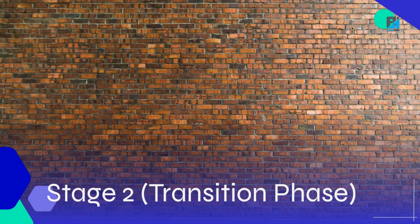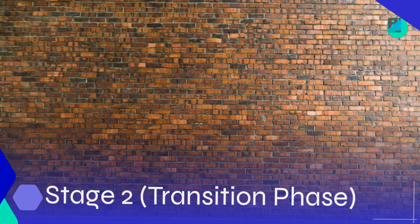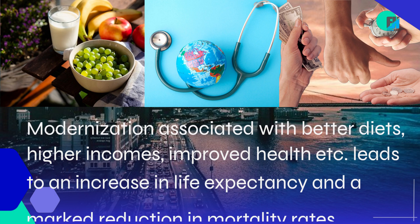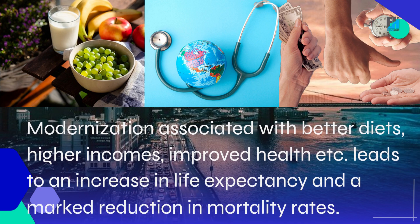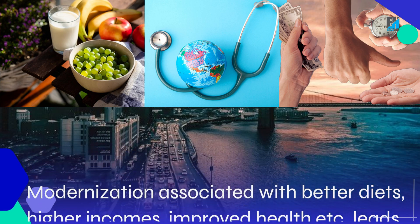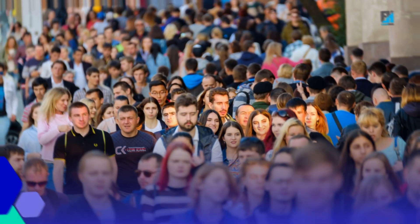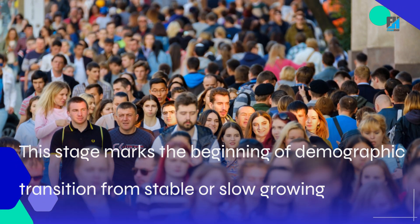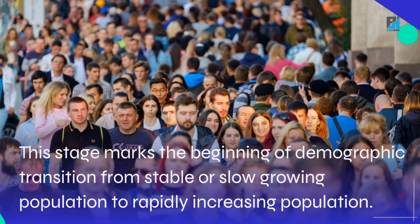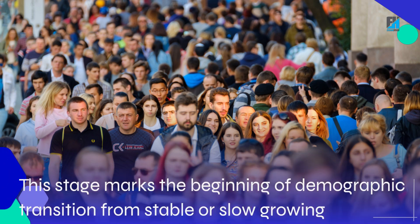Stage 2: Transition Phase. Modernization associated with better diets, higher incomes, improved health, and so on leads to an increase in life expectancy and a marked reduction in mortality rates. This stage marks the beginning of demographic transition from a stable or slow-growing population to a rapidly increasing population.